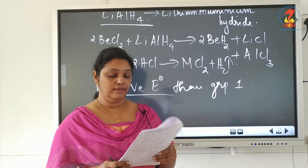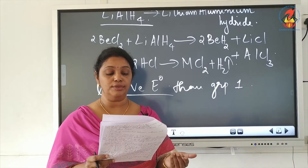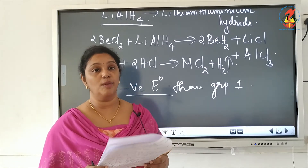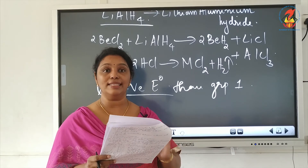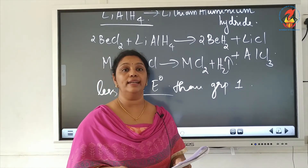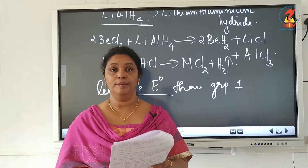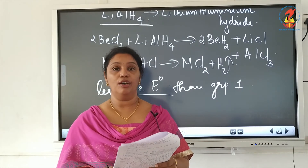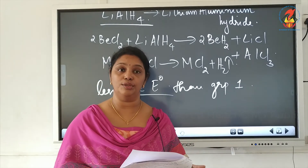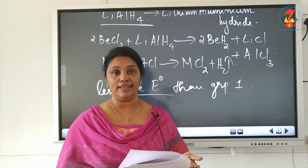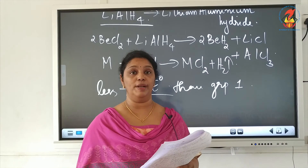The reducing property can also be due to the large hydration enthalpy associated with the small size of the Be²⁺ ion. Among group 2 elements, beryllium has the less negative E° value compared to other alkaline earth metals. The reason is the high hydration enthalpy of the Be²⁺ ion due to its small size.